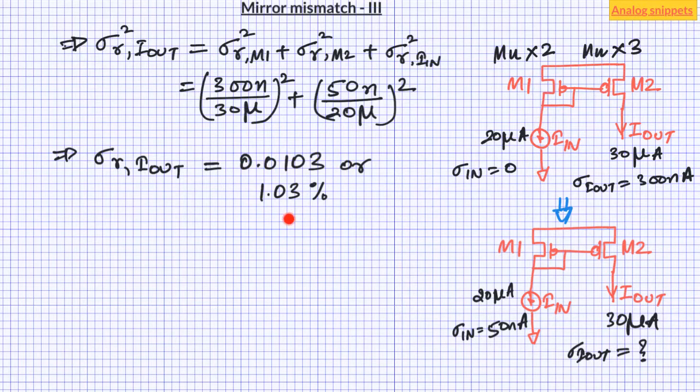So let's put the values and see. So total variation is 1.03%. So now we can calculate the absolute error. So absolute current in output current has increased from 300 nanoampere to 309 nanoampere.